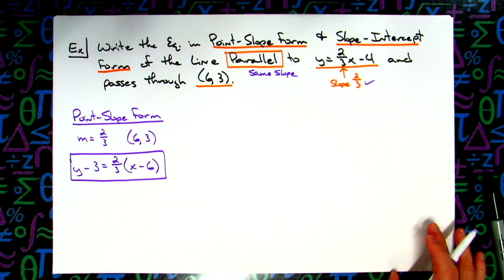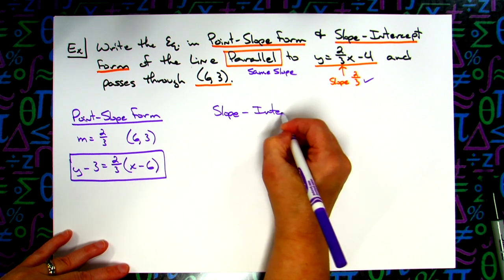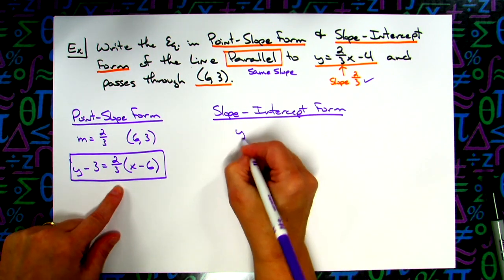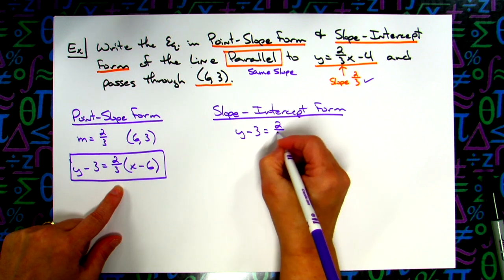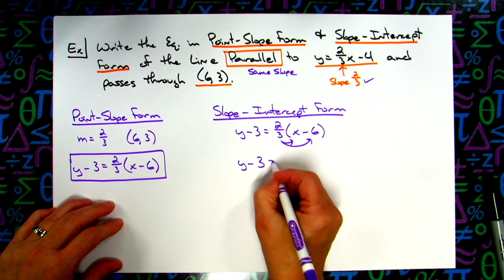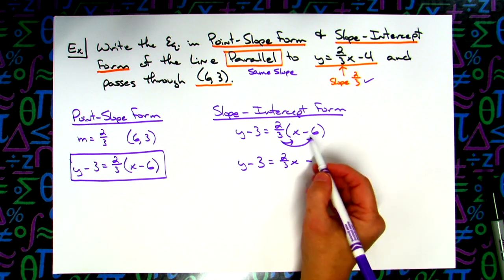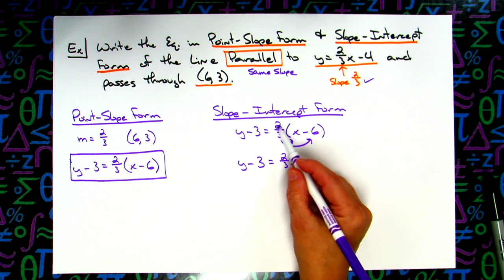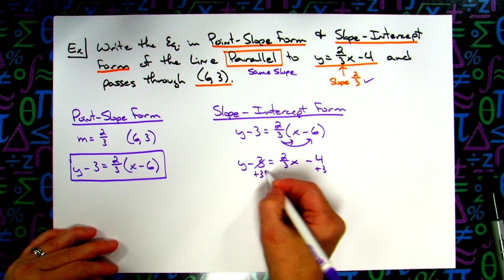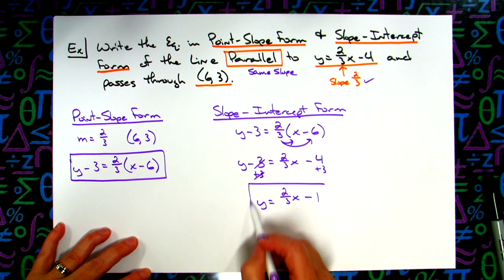Now converting to slope-intercept form: starting from y minus 3 equals two-thirds (x minus 6), I distribute — that gives y minus 3 equals two-thirds x. Then two-thirds times 6: six divided by three is two, times two on top is four, so minus four. Adding 3 to both sides gives y equals two-thirds x minus 1, and there is the slope-intercept form.